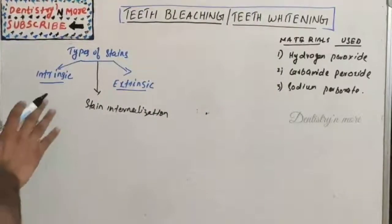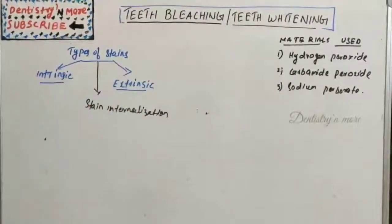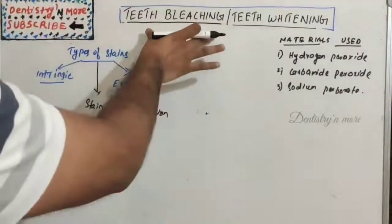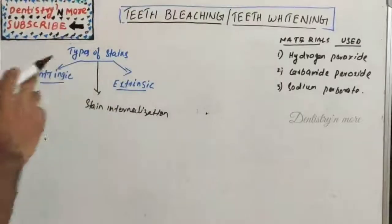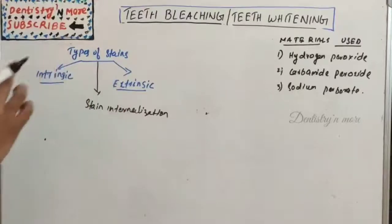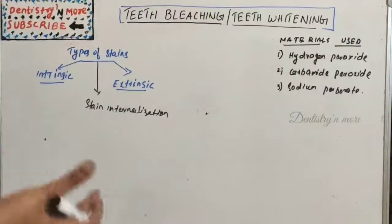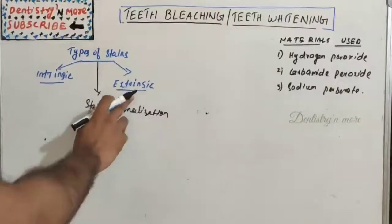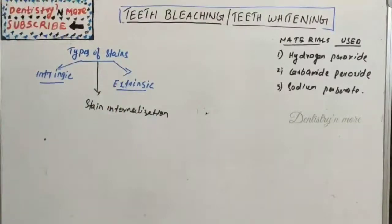There are basically two types of stains that bleaching attempts to lighten: intrinsic stains, which are present internally within the tooth, and extrinsic stains, which are present on the outer surface of the teeth. Stain internalization refers to extrinsic stain that has moved inside through a defect in the enamel structure.